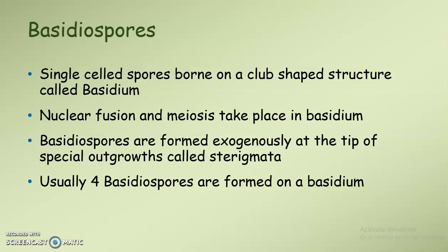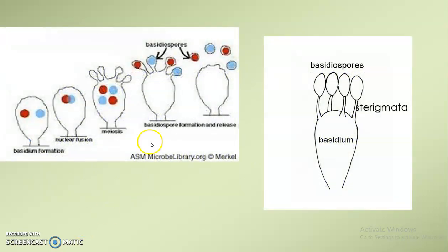Usually four basidiospores are formed on the tip of a basidium, and basidiospores are mainly formed by Basidiomycetes. In the diagram, inside the basidium the male and female nuclei fuse to form a diploid zygote, followed by meiosis to form four haploid nuclei. These haploid nuclei migrate to the tip of the sterigmata.